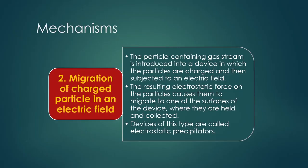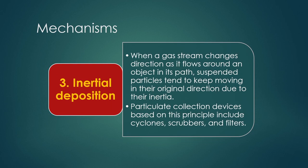The ionized particles shift to the cathode or anode based on what type of ionic particles are produced. This is the main mechanism — migration of charged particles in an electric field. Devices of this type are called electrostatic precipitators.